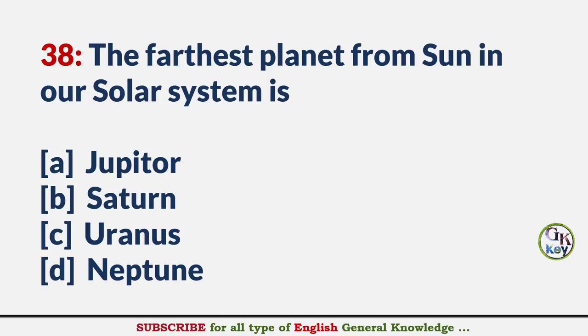The furthest planet from the sun in our solar system? Answer D: Neptune.